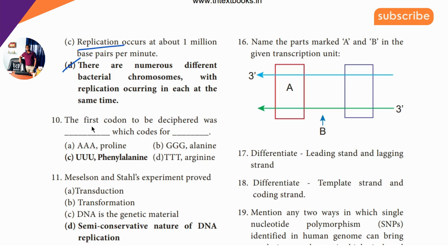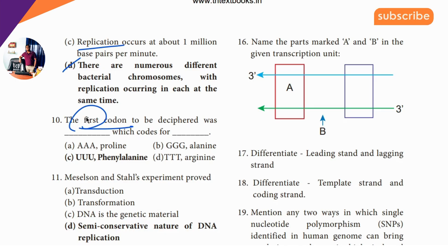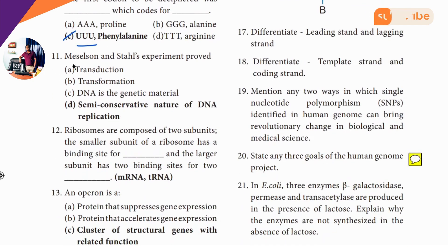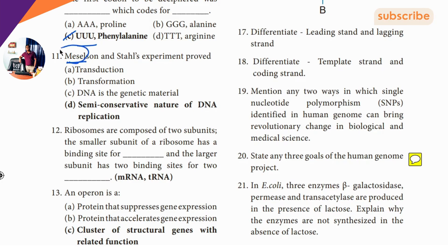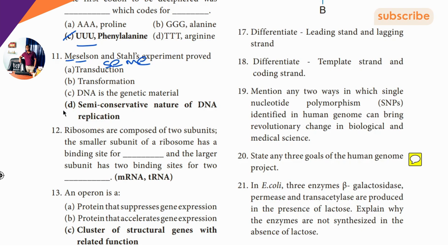Tenth question: Meselson experiment. The answer is semi-conservative replication — semi, semi, semi. This is the Meselson and Stahl experiment proving semi-conservative DNA replication. Option C.